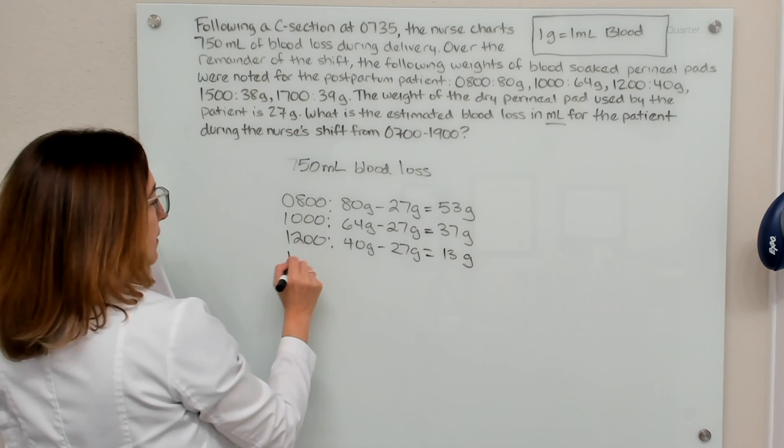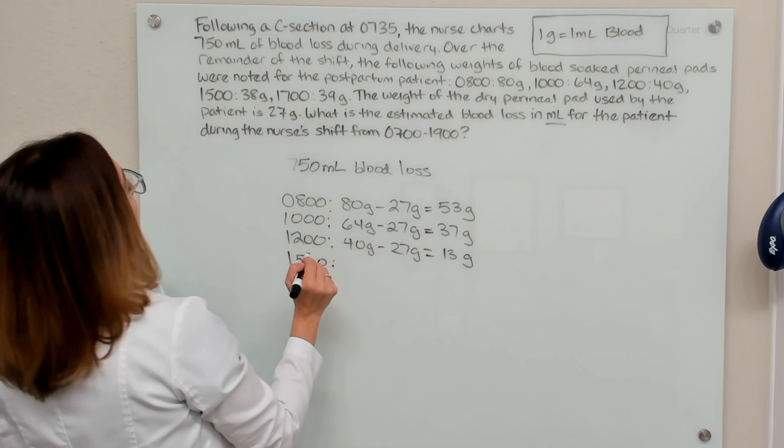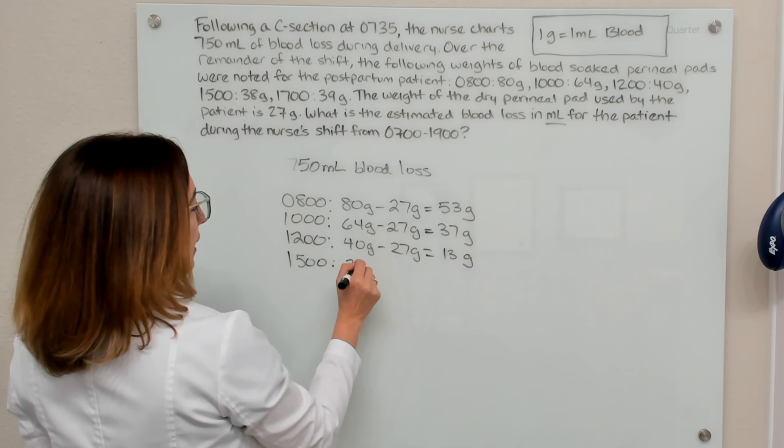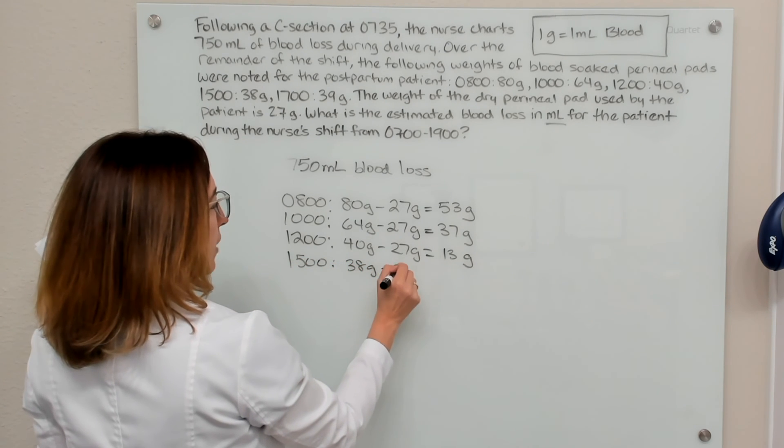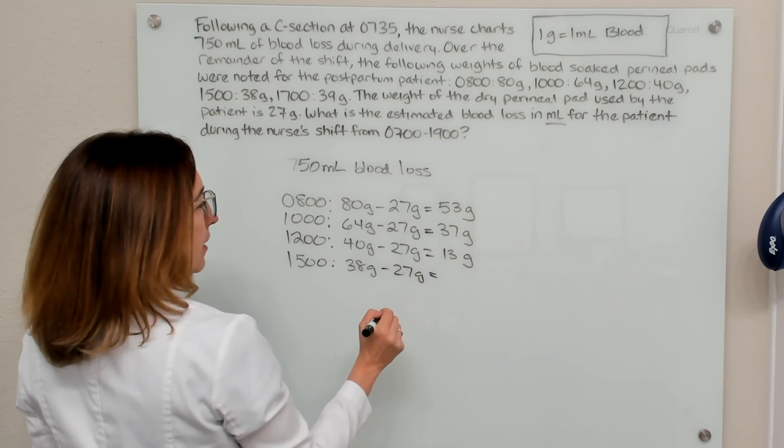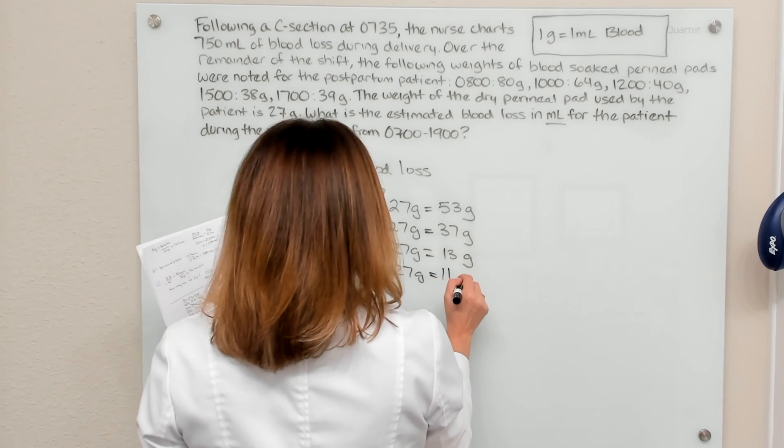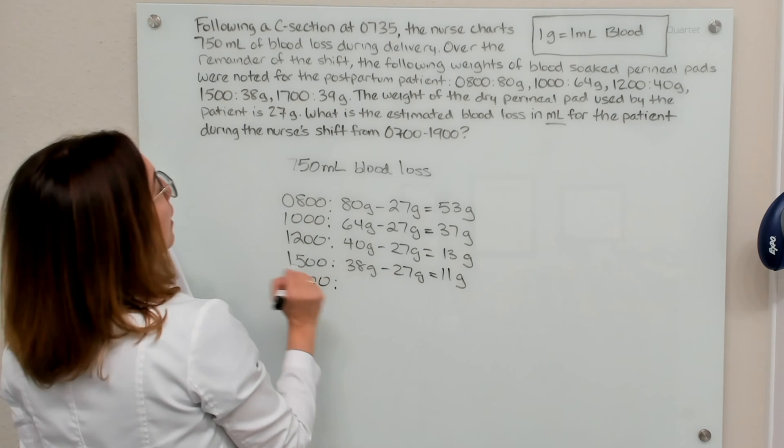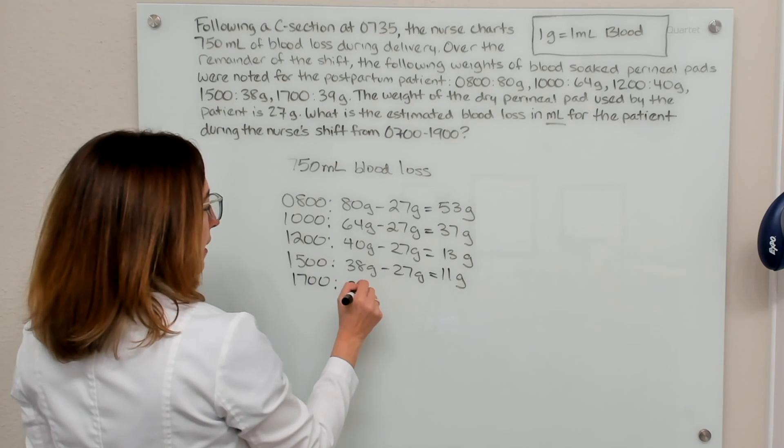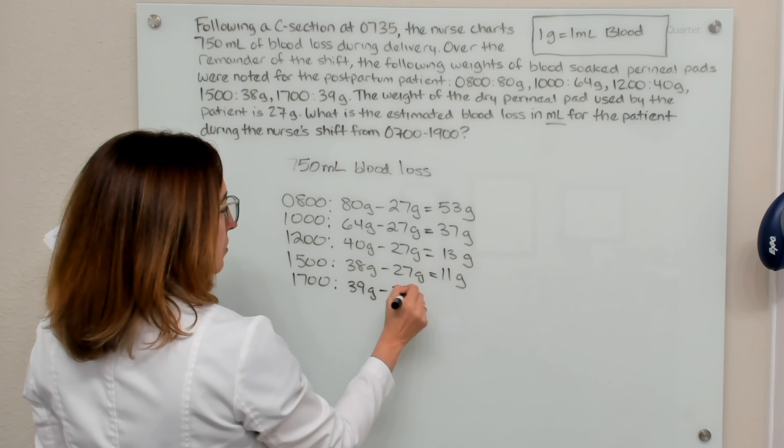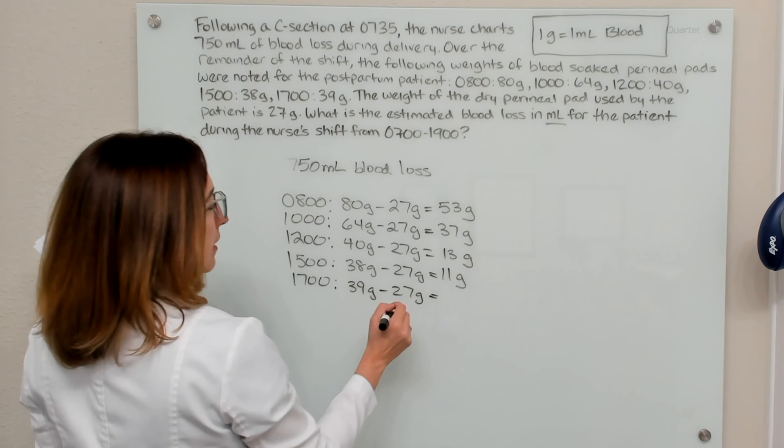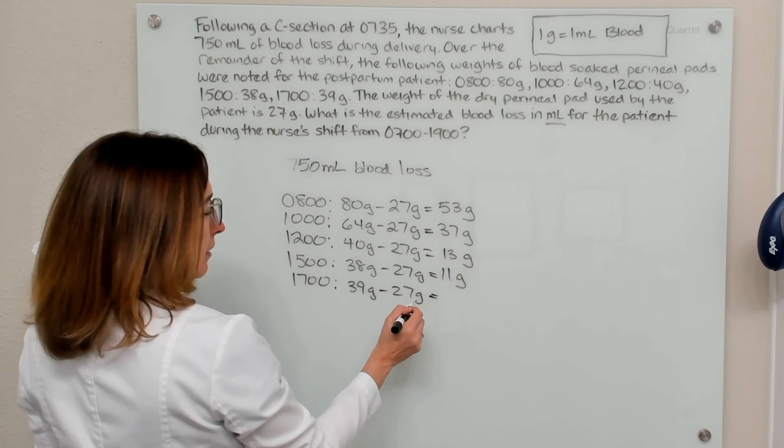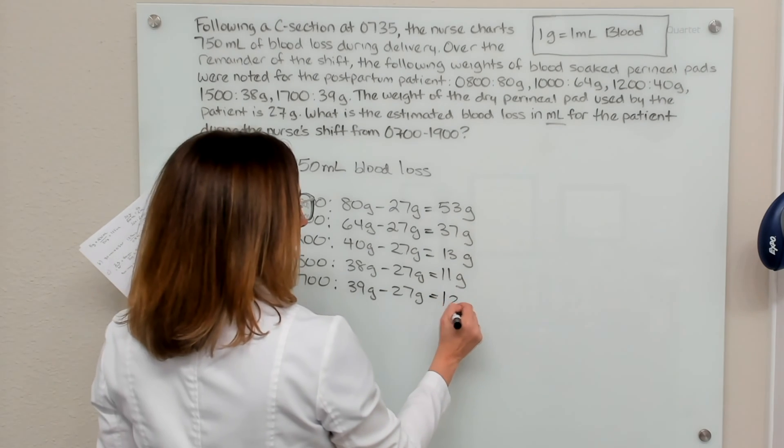And then at 1500, the pad weighed 38 grams. If we subtract out the 27 grams, we end up with 11 grams. And then finally, at 1700, that pad weighed 39 grams. So if we subtract out 27 grams, the weight of the dry perineal pad, we end up with 12 grams.